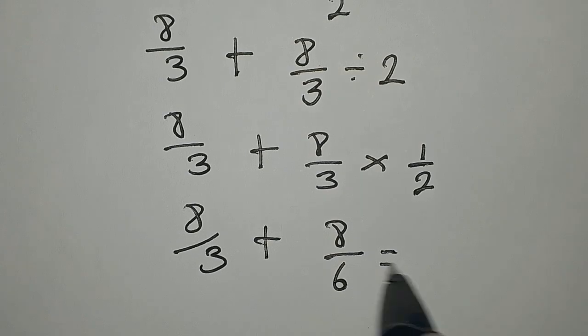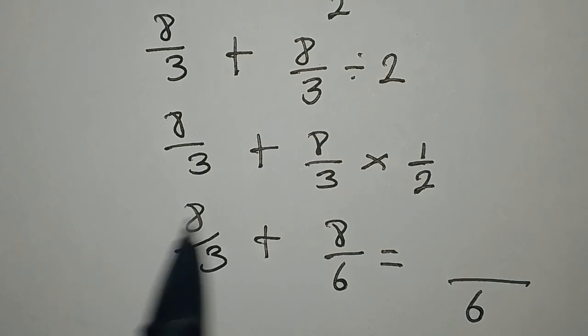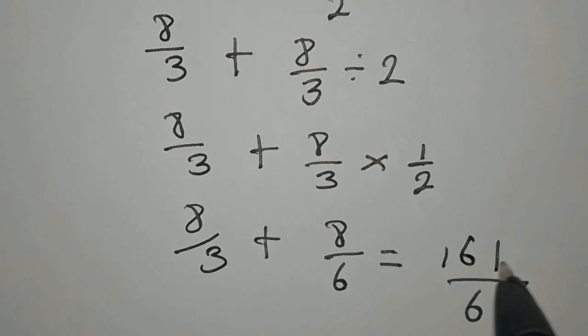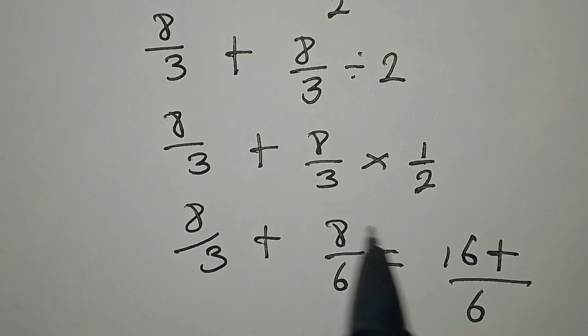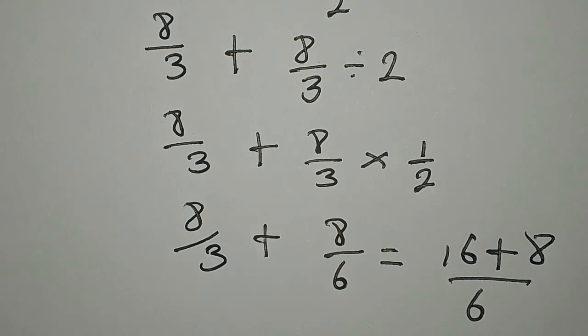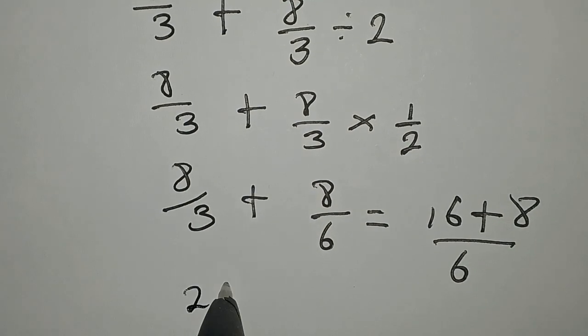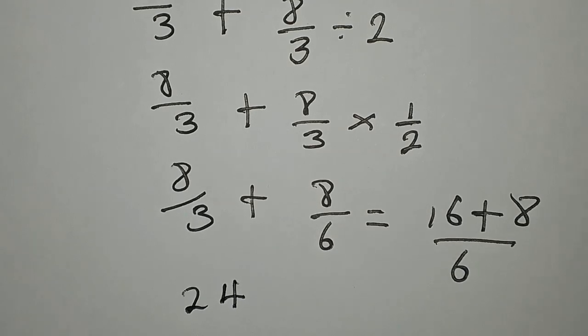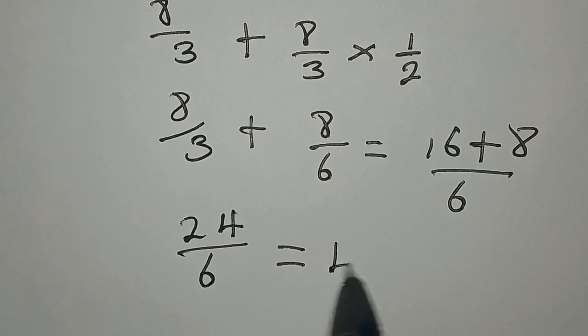And the LCM is 6. 6 divided by 3 is 2 times 8 is 16 plus 6 divided by 6 is 1 times 8 is 8. Then we are going to add this up as we get 24, then we divide by 6. 24 divided by 6 is giving us 4.